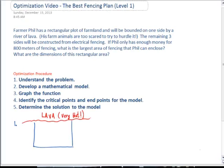Farmer Phil has a rectangular plot of land, so I drew a rectangle, and it's bounded on one side by a river of lava. The lava is very hot, by the way. So the remaining three sides of the fence are going to be constructed from electrical fencing, and Phil only has enough money to buy 800 meters of fencing. So they want us to figure out what configuration of the three sides will yield the largest area.